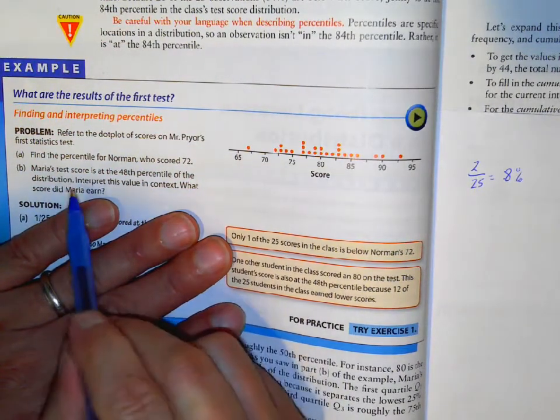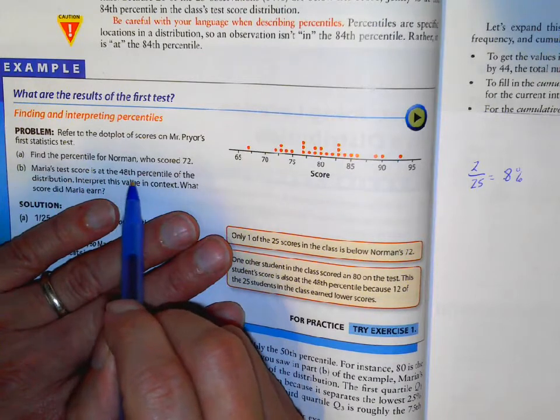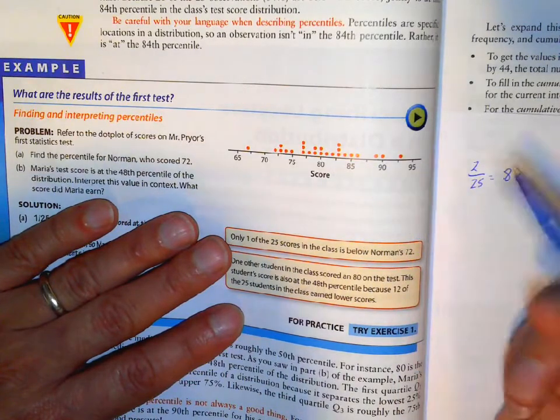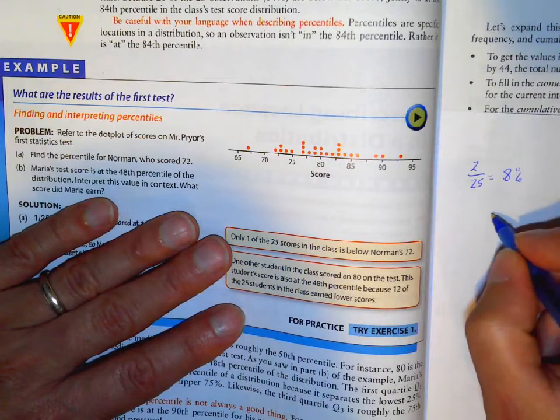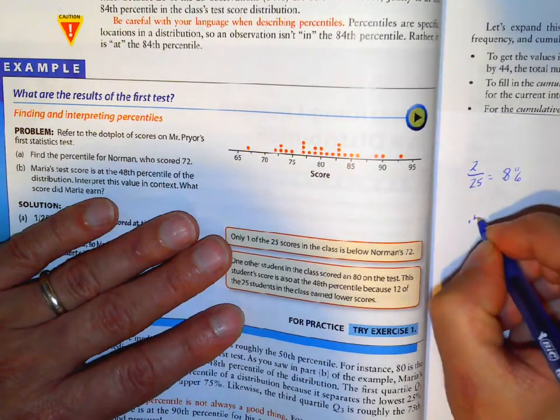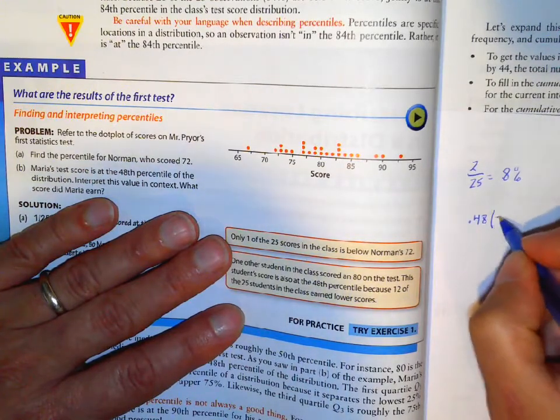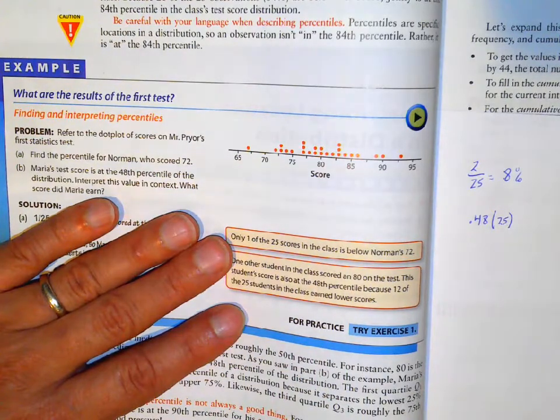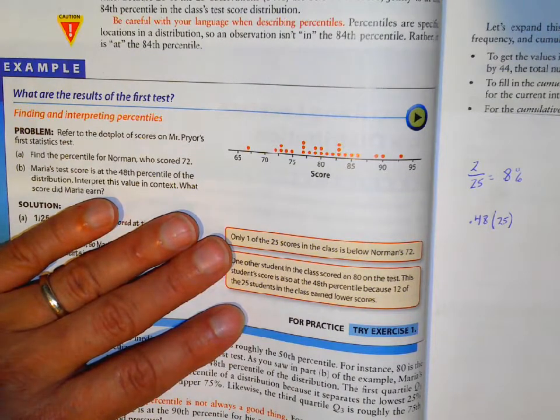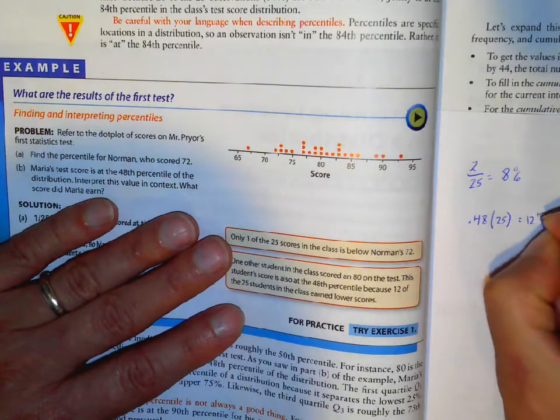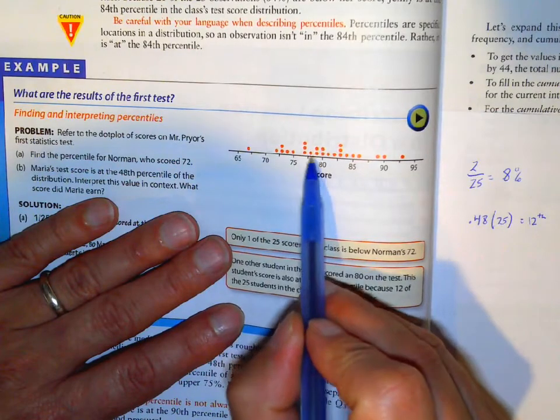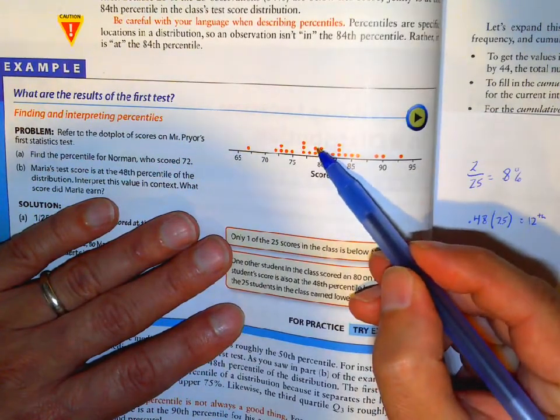Maria's test scores at the 48th percentile and we want to know what was her score. So the 48th percentile. So I want to know how many numbers in is the 48th percent. So 48th percent of 25 numbers is at the 12th number. Counting 1, 2, 3... 12. So it looks like she scored a 79.